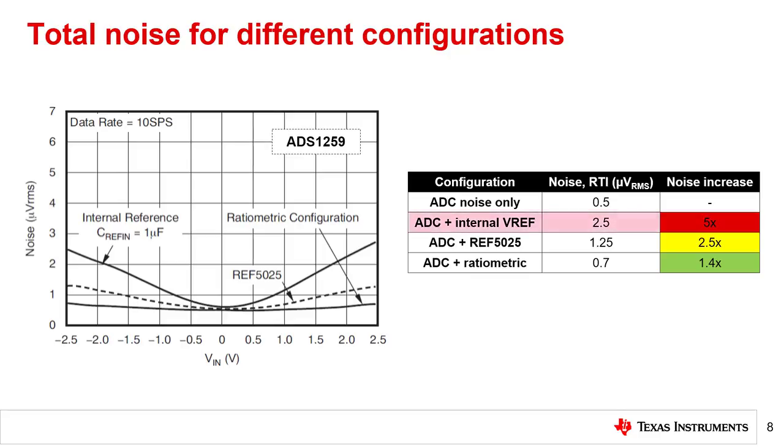Using the internal reference increases the total system noise by a factor of 5 compared to the baseline ADC noise only, while the external reference increases the total noise by a factor of 2.5.